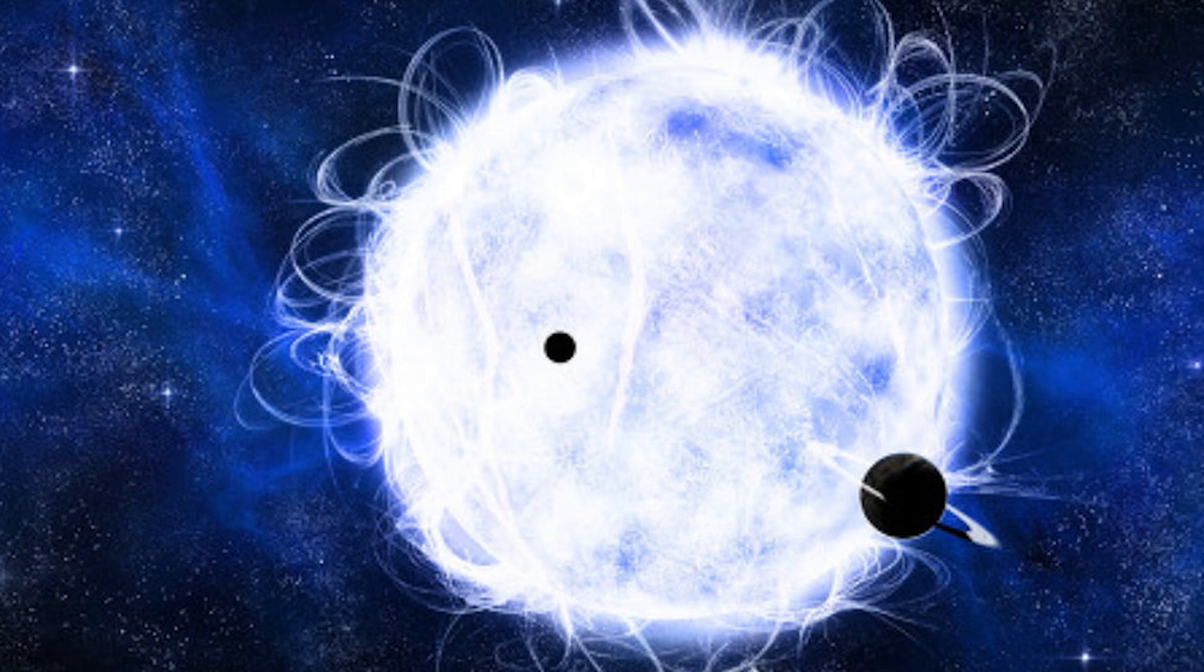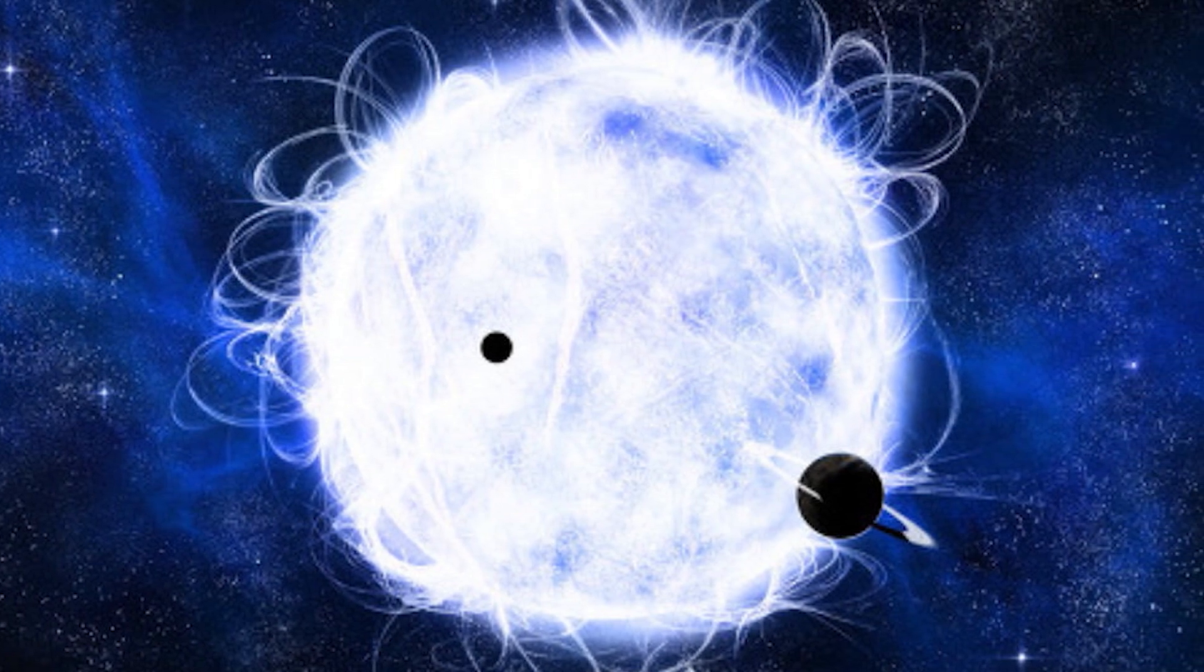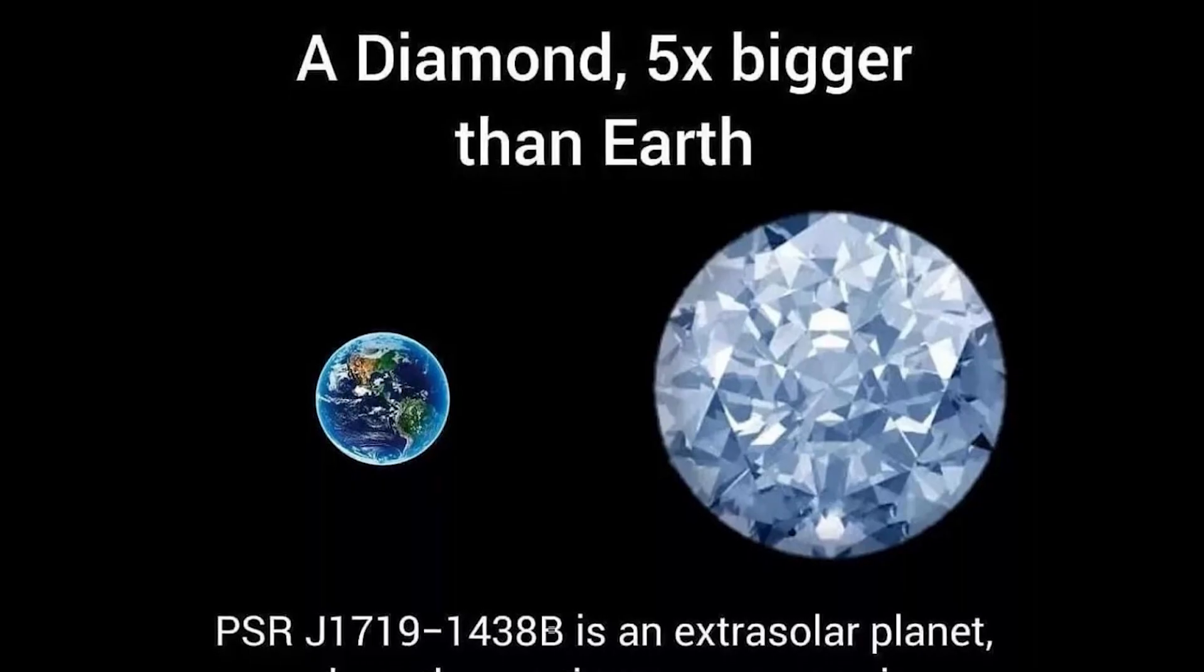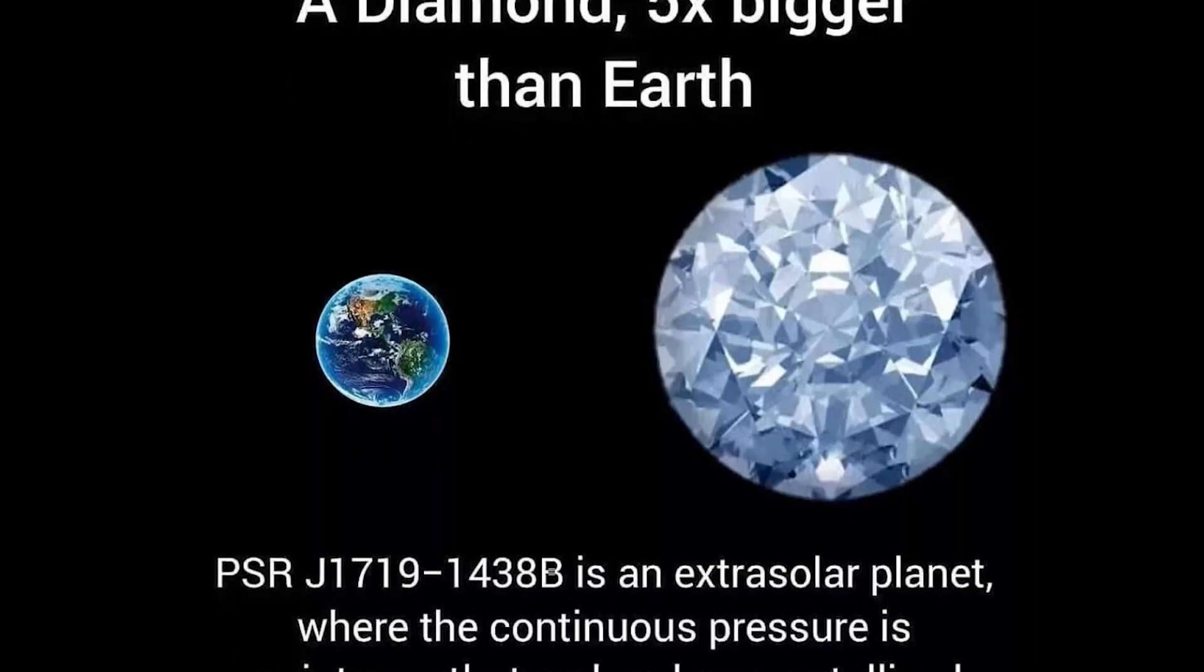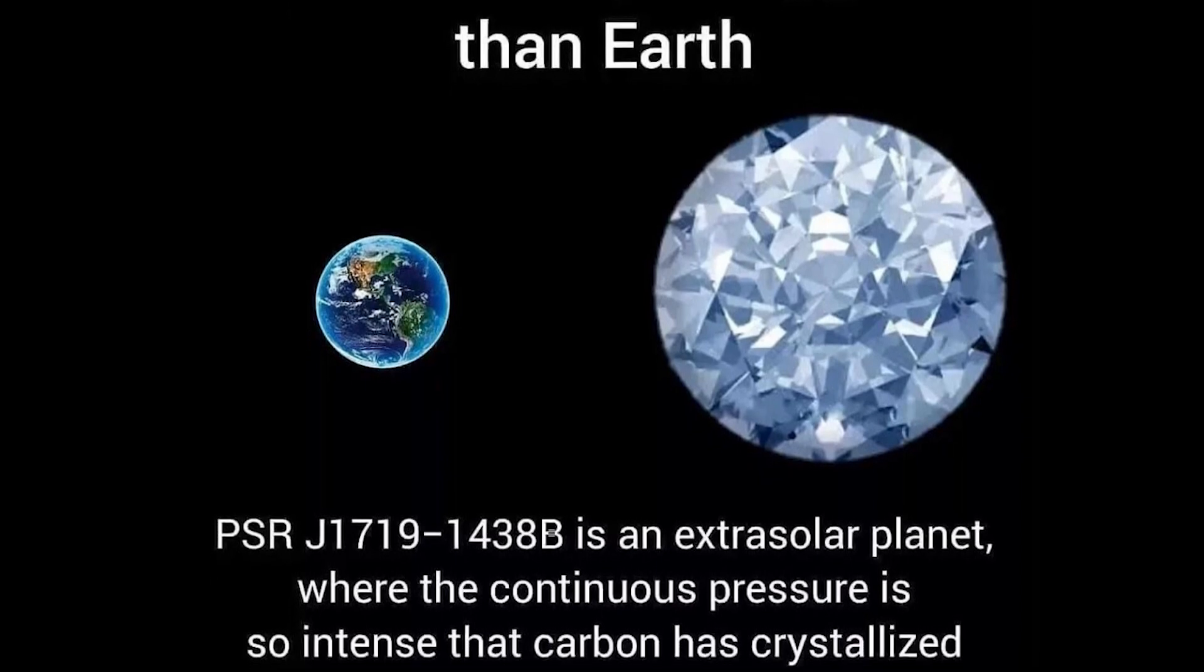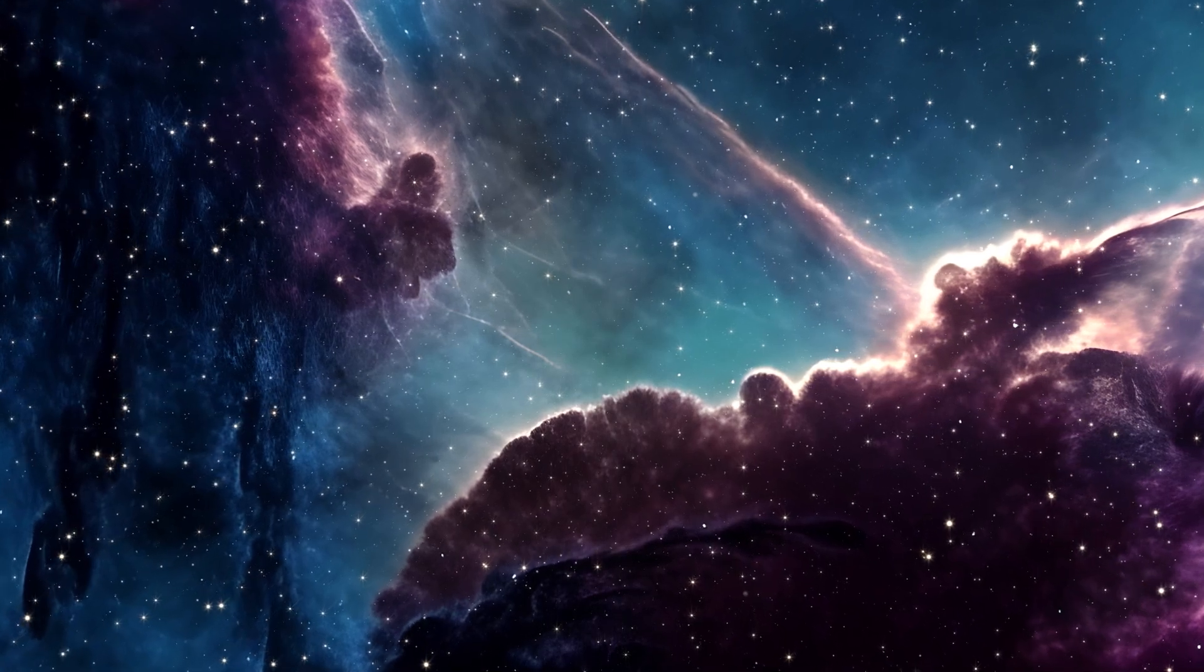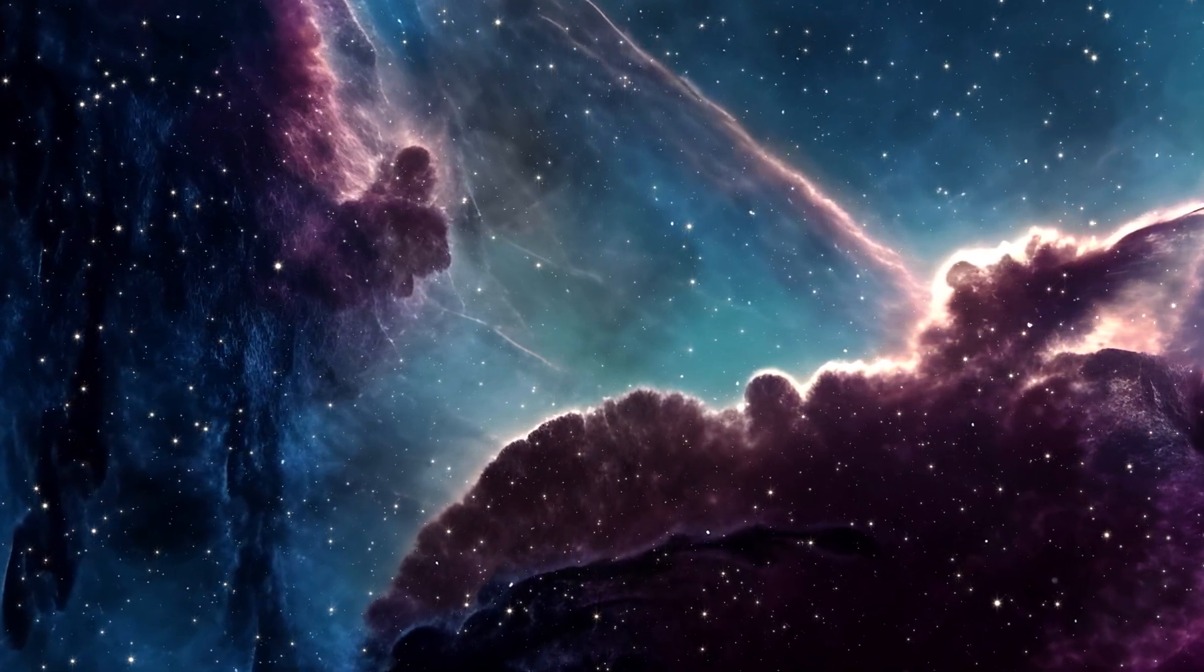Well, this planet used to be a star too, but its outer layers got taken away by the really massive neutron star it orbits. So now, it's kind of like a big diamond planet, about five times the size of Earth, with a width of around 60,000 kilometers.